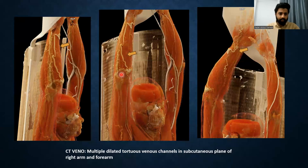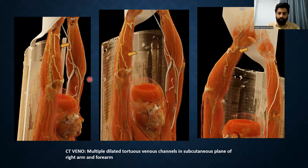This is a 3D reconstruction image showing the multiple dilated tortuous venous channels over the right upper arm and forearm.